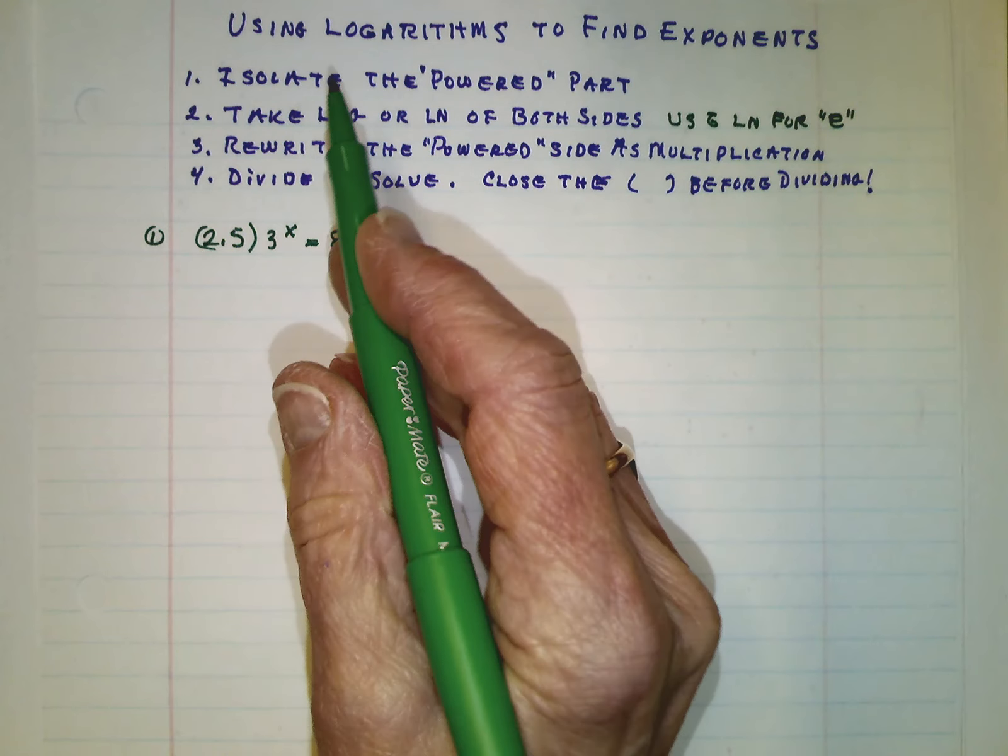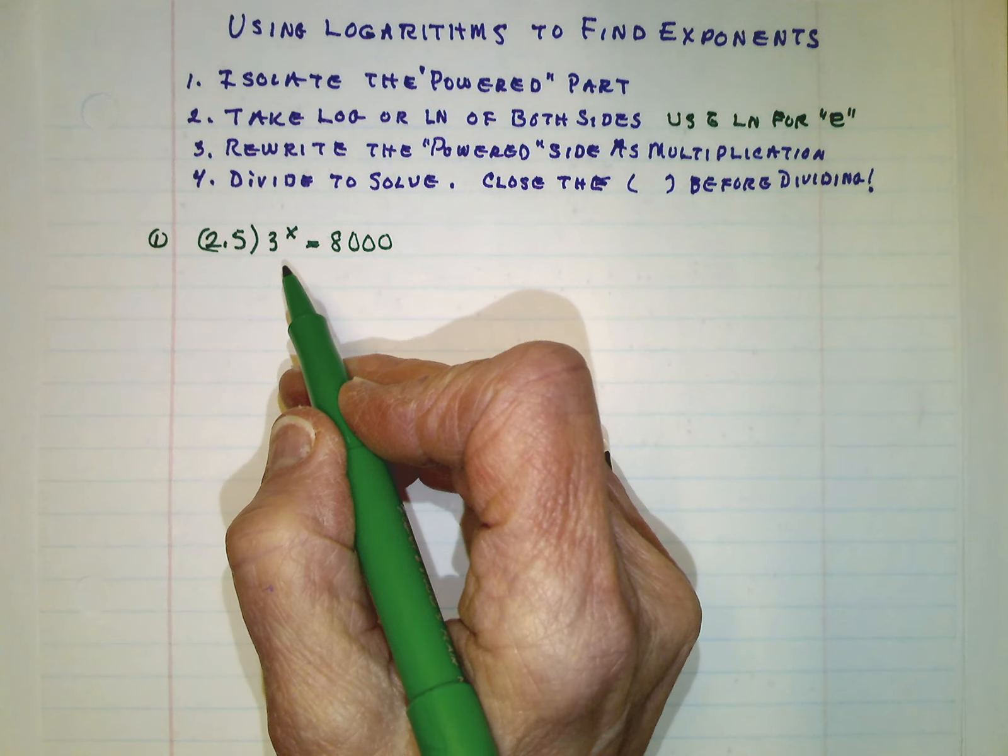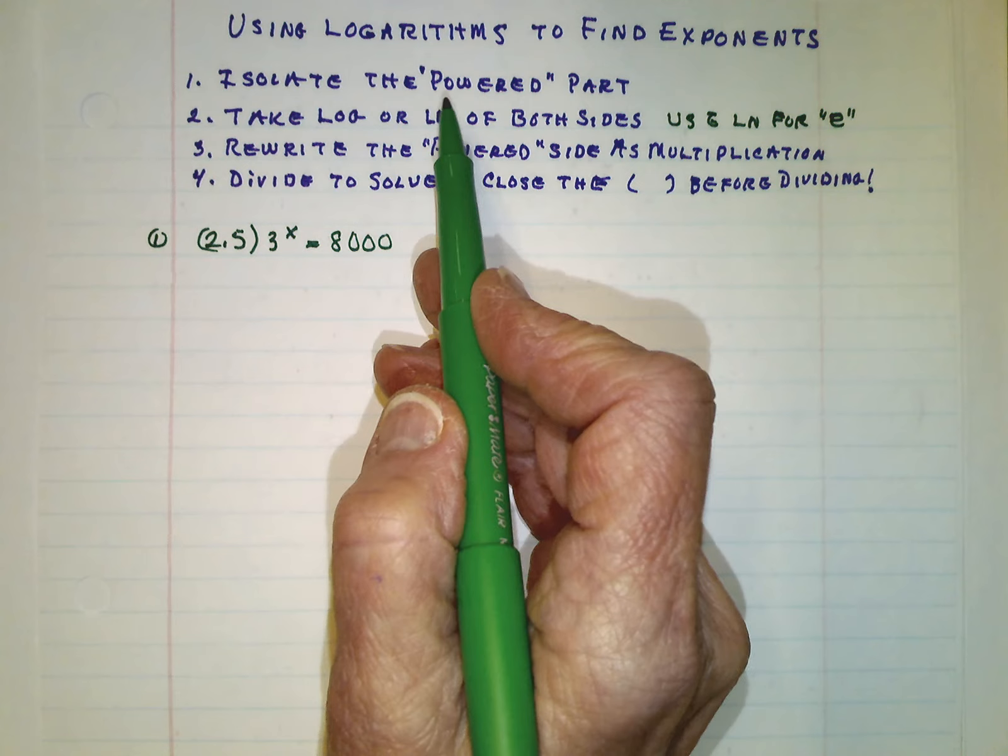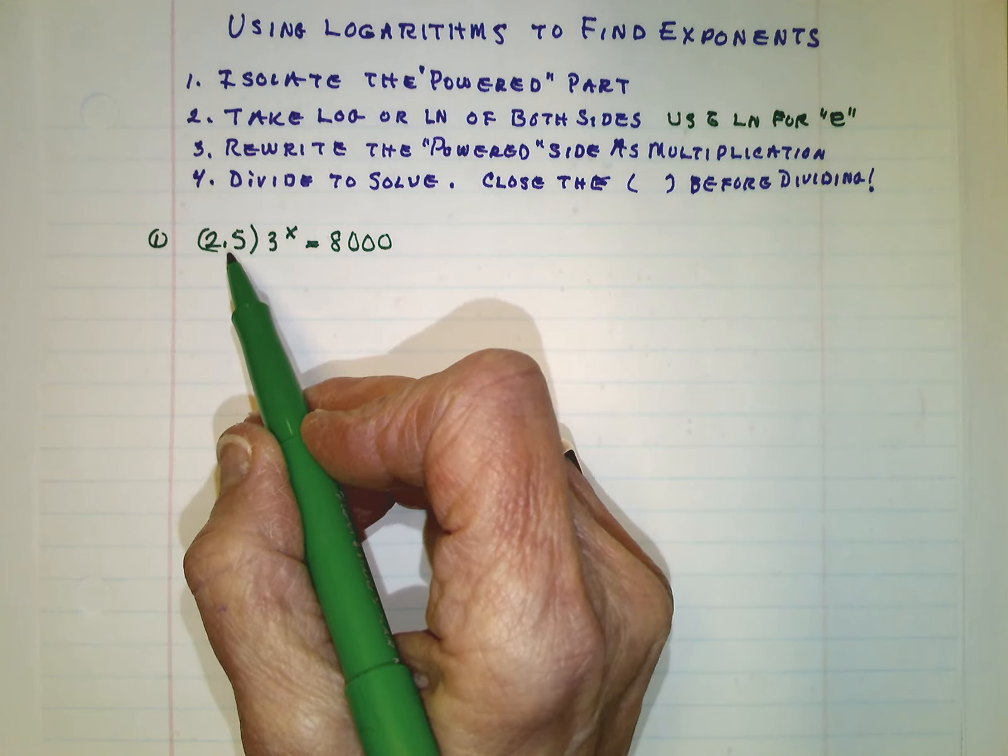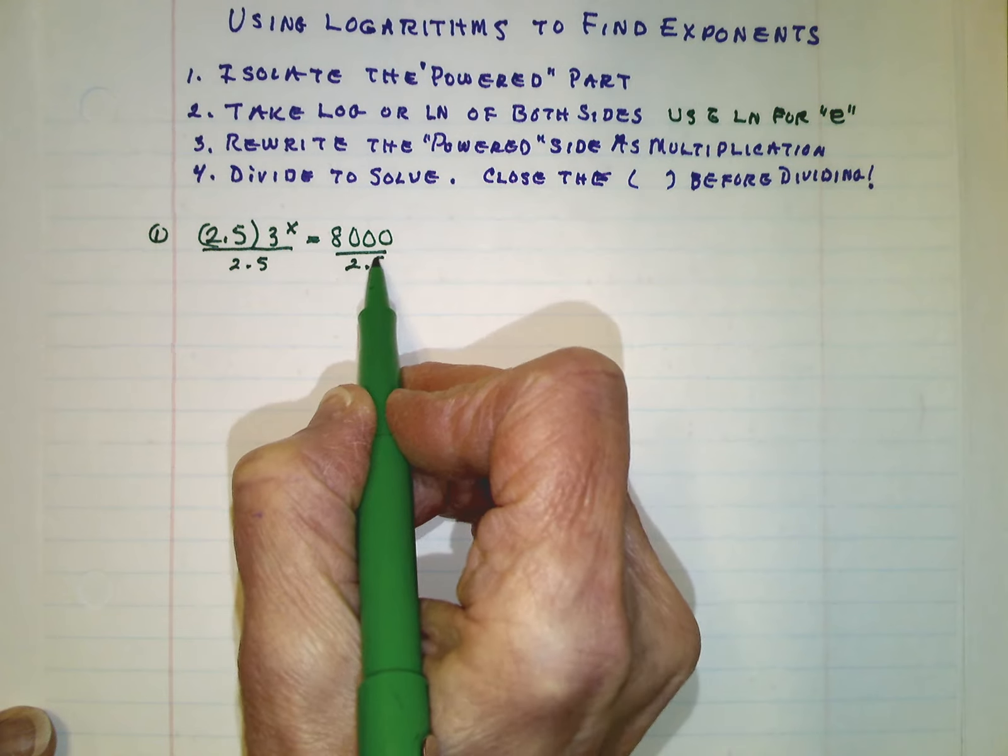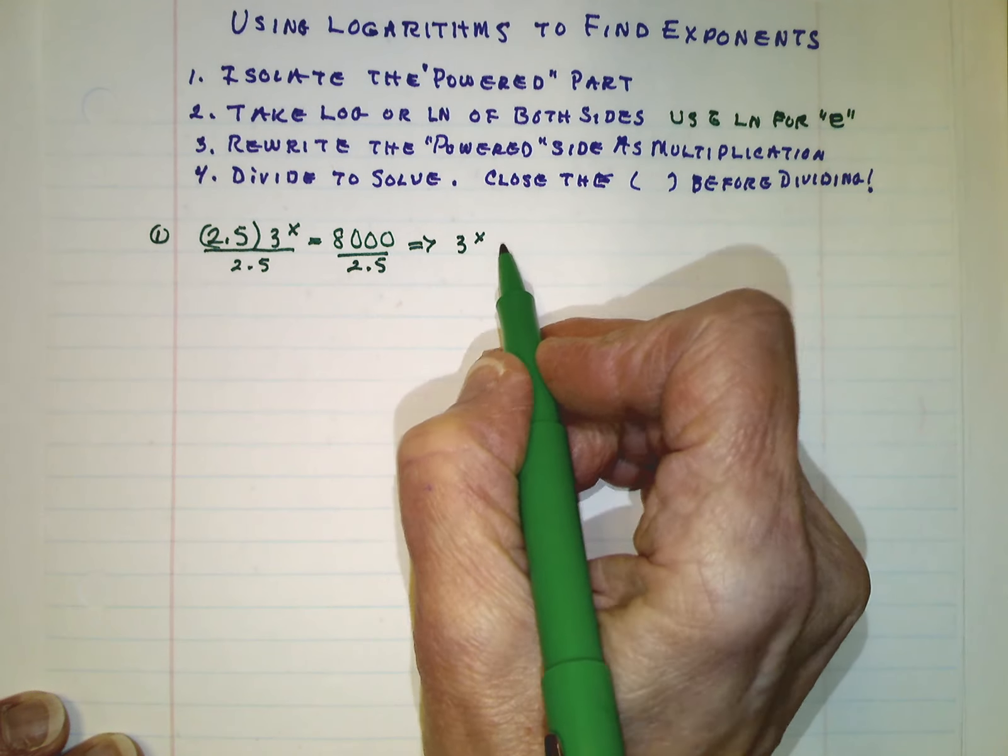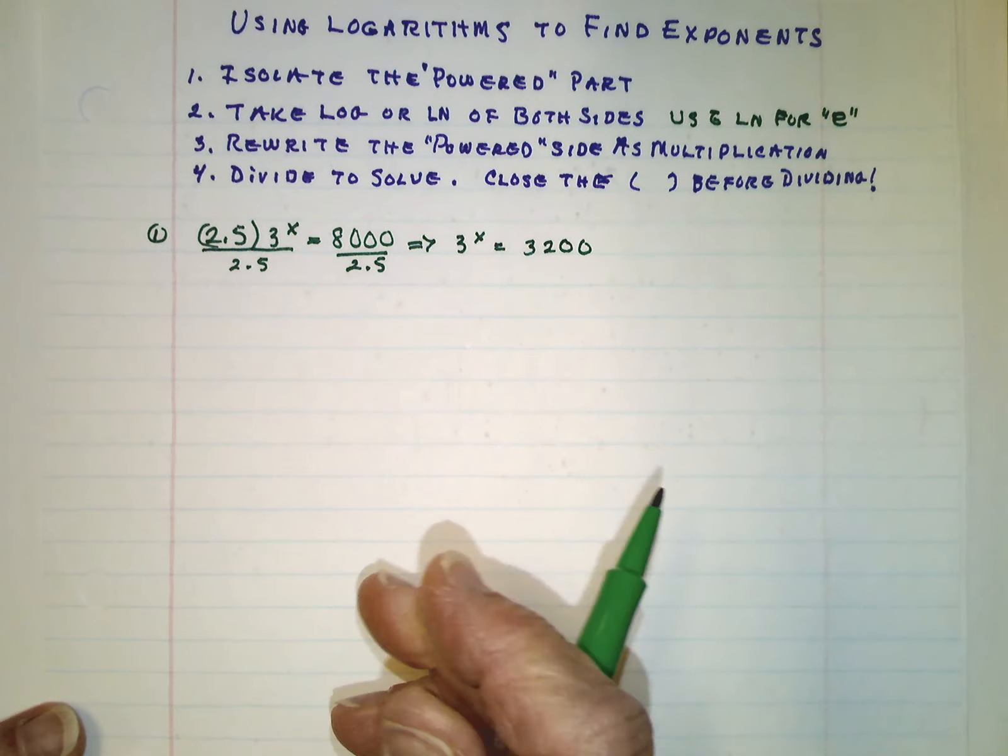So we're going to just follow these steps. And without having to do guess and check endlessly to find the answer correct to the nearest thousandth, we're going to take care of it with the calculator. So first it says isolate the powered part. The only thing being powered here is the 3. We need to get rid of this 2½ that's multiplying times the 3 to the x. So we will just divide both sides by 2.5. And now we've got that 3 to the x is all by itself. And that equals 3,200. Look at much better already.